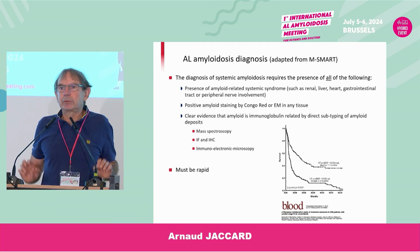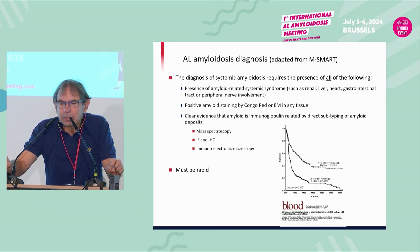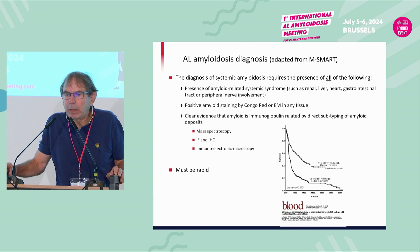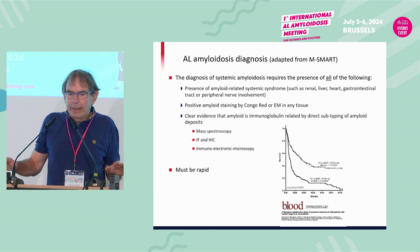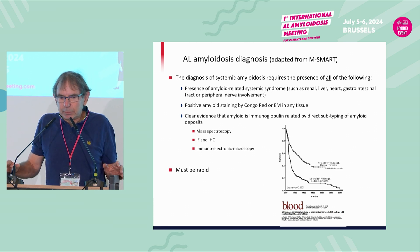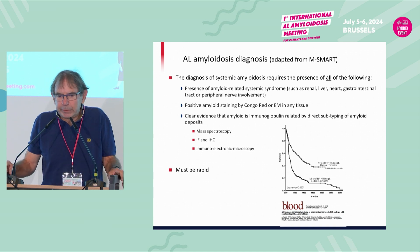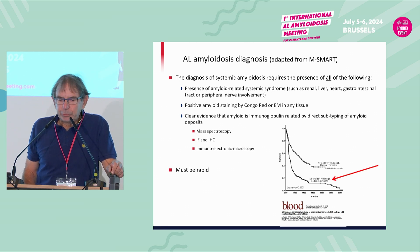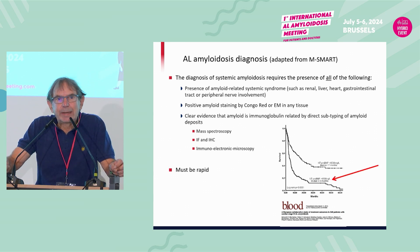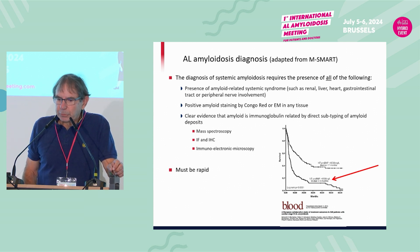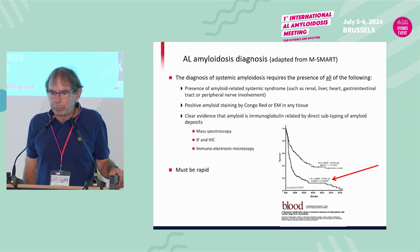First is to do the diagnosis, and it requires the presence of all of the following: an amyloid-related systemic syndrome, a positive amyloid staining by Congo Red or electron microscopy, and clear evidence that amyloid is immunoglobulin-related. The typing should be done by mass spectroscopy, immunofixation, immunohistochemistry, and immunoelectron microscopy. You have to do this rapidly to avoid a very severe cardiac disease survival curve outcome.